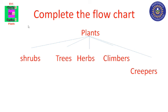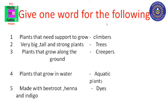Write this in the textbook. Next, give one word for the following. First, plants that need support to grow — climbers. Second, very big, tall and strong plants — trees. Third, plants that grow along the ground — creepers. Fourth, plants that grow in water — aquatic plants. Fifth, made with beetroot, henna and indigo — dye.